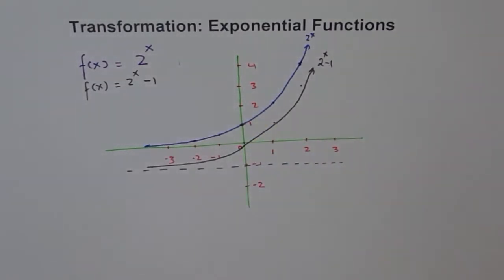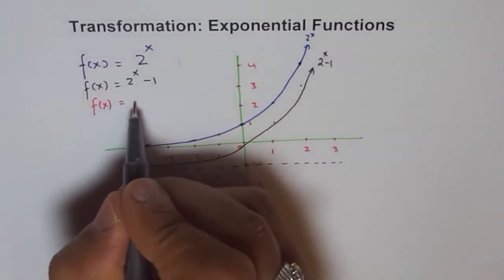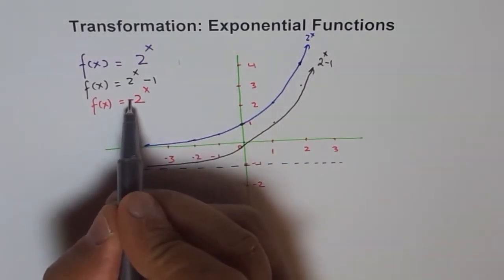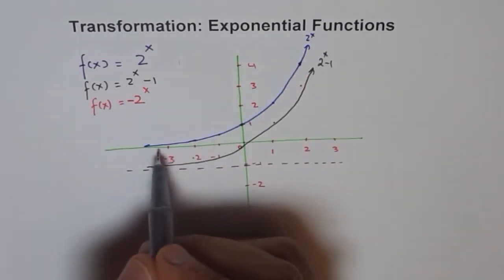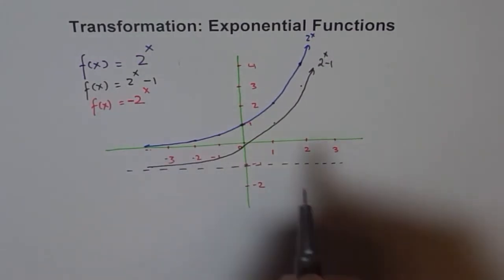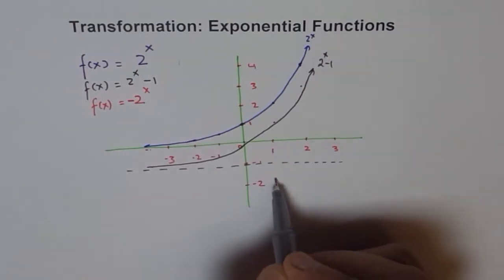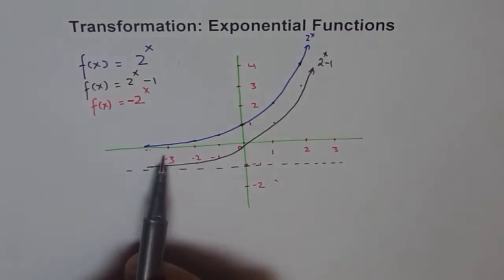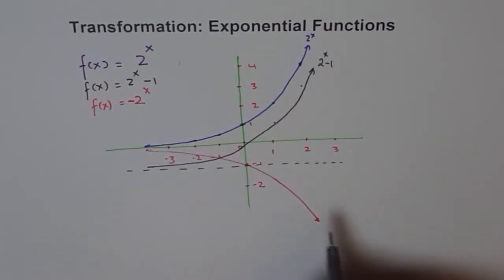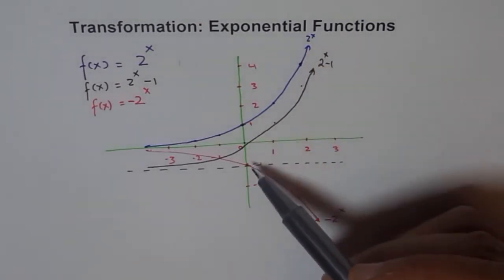Now if I consider another function f(x) = -2^x, putting the minus in front reflects the graph on the x-axis. So this graph gets reflected. At x = 1 I will have -2, and at x = 0 I will have -1. The graph is pulled down and reflected across the x-axis. So this is the function -2^x — the graph of 2^x gets reflected on the x-axis.